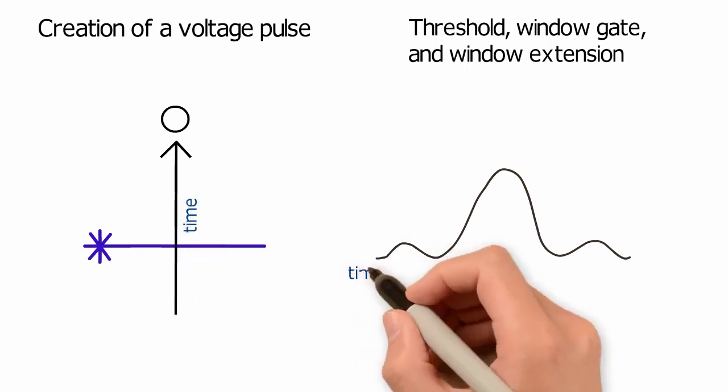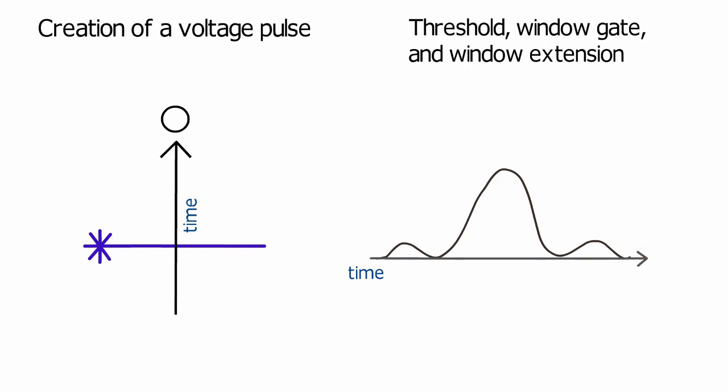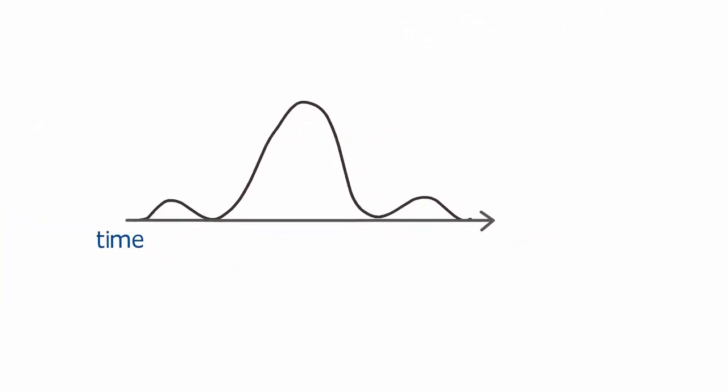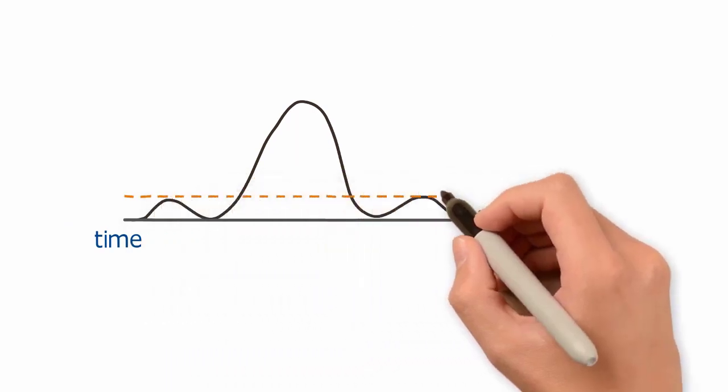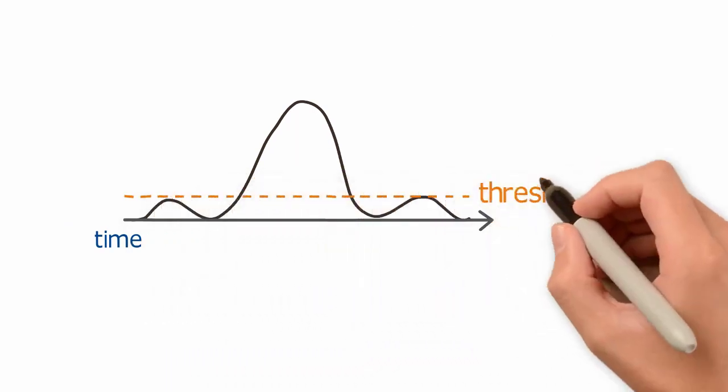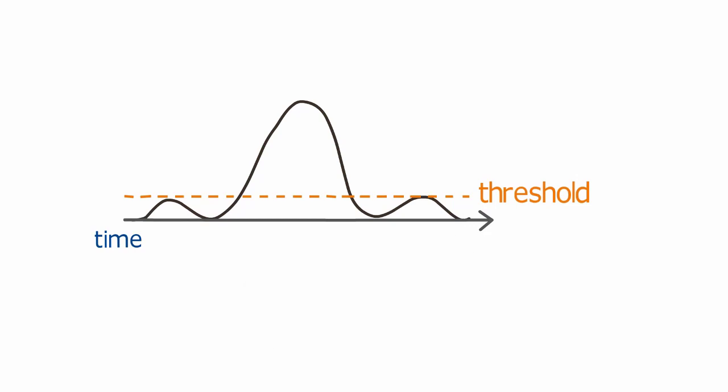The signal is digitized by measuring the height of the pulse at set intervals of time. To determine if a signal is significant, a threshold is applied. Measurements that are below the threshold will be ignored.